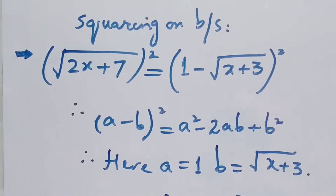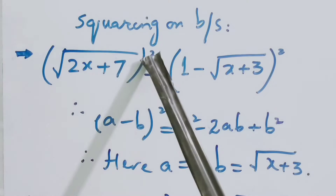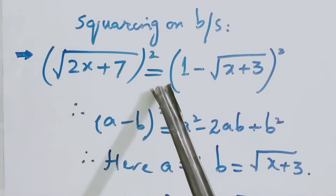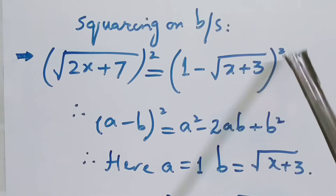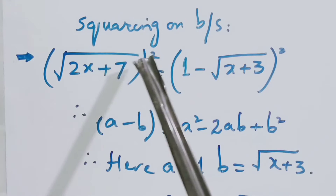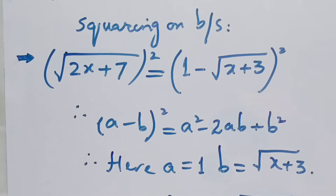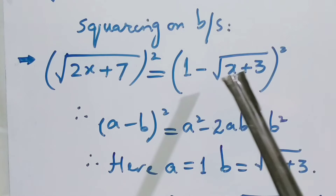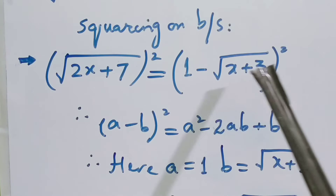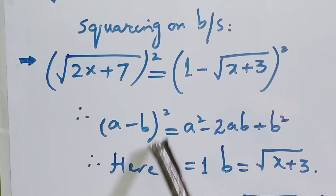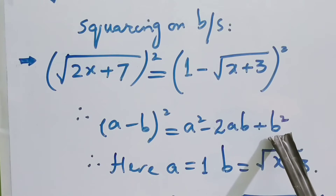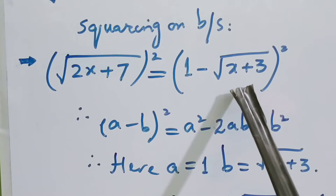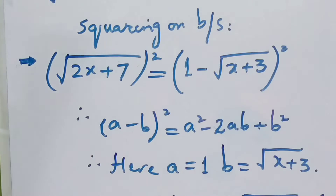We put the square on both sides: root of (2x + 7) whole square equals (1 minus root of (x + 3)) whole square. The square cancels the root sign, since the root is the power half which cancels with 2. We open (1 minus root of (x + 3)) whole square with the formula (a − b)² = a² − 2ab + b², where a = 1 and b = root of (x + 3).